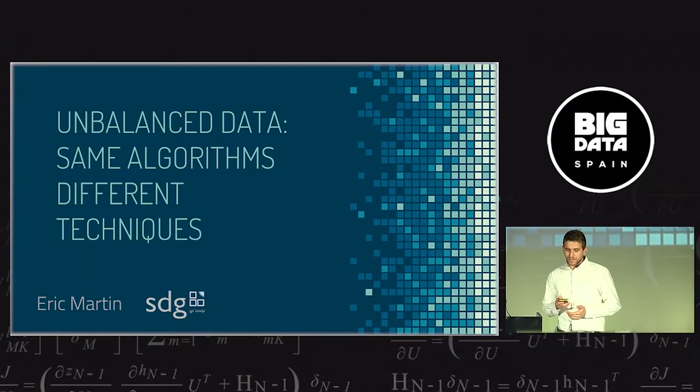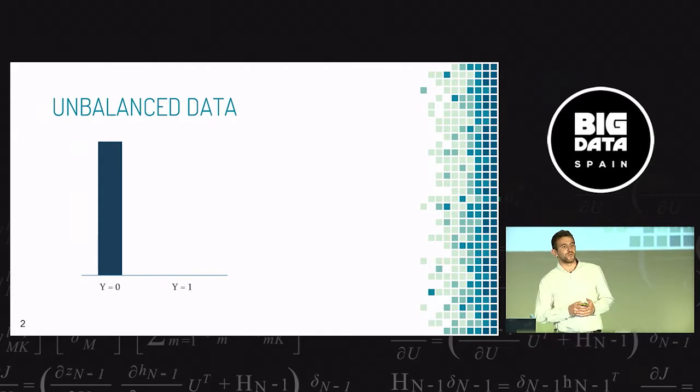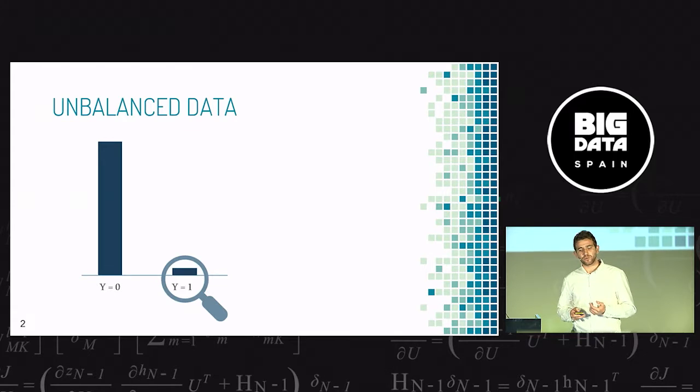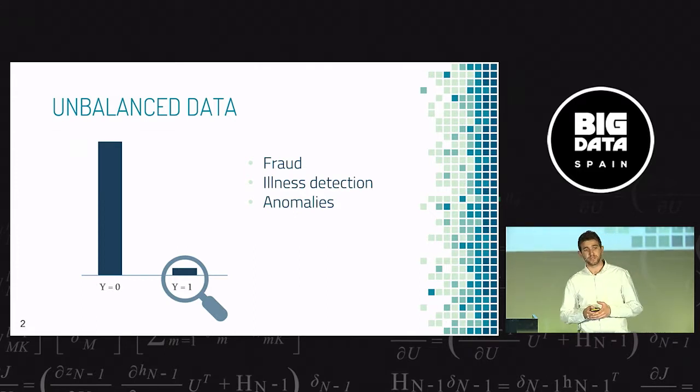Maybe most of you know this part, but let me start with a very quick introduction about unbalanced data. Unbalanced data is every amount of data where a class predominates over the other one. Most people think it's really common in nature.